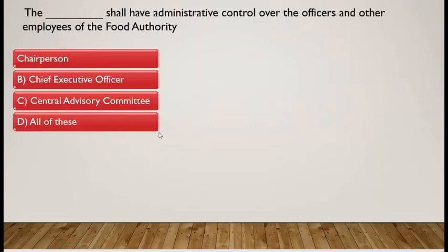The next question: who shall have the administrative control over the officers and other employees of the Food Authority? The answer is the Chief Executive Officer — the CEO holds executive authority over all staff under the Food Authority.